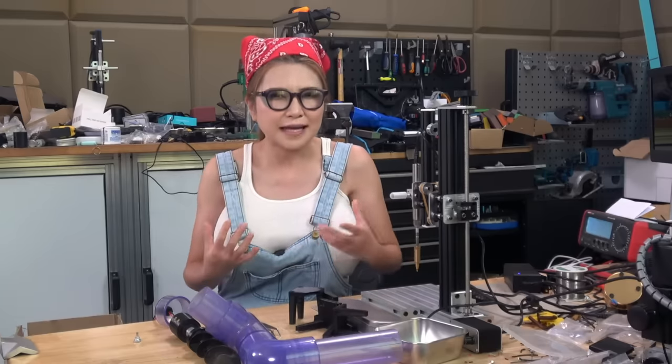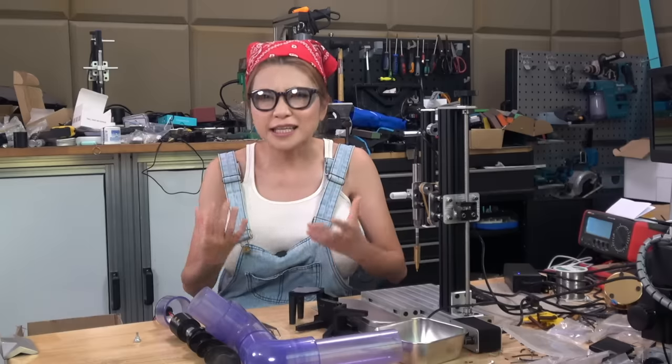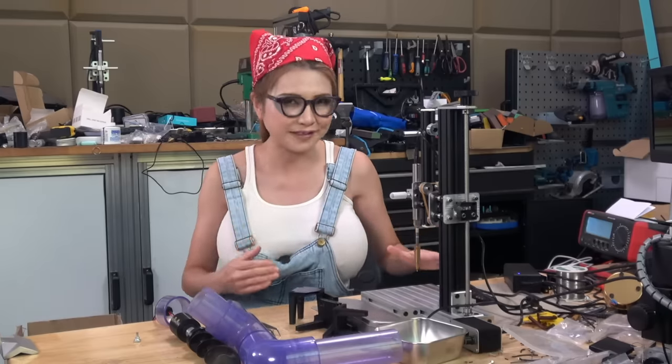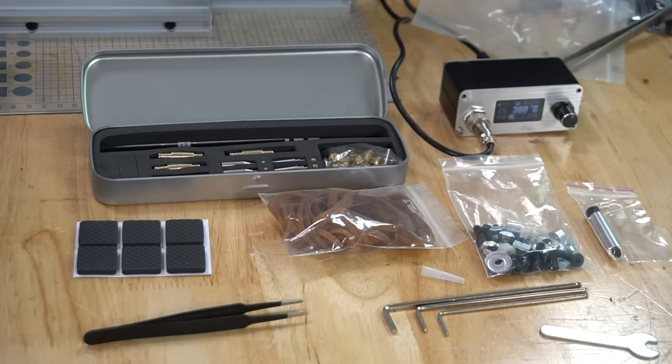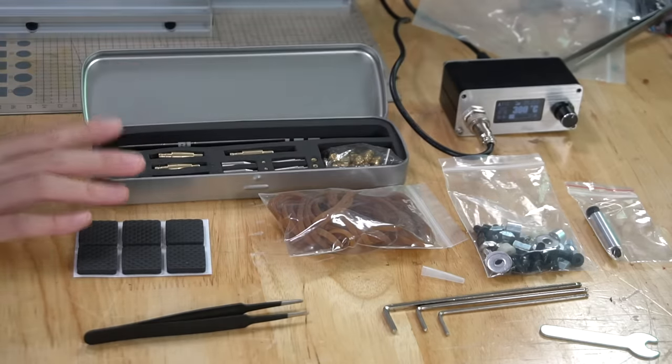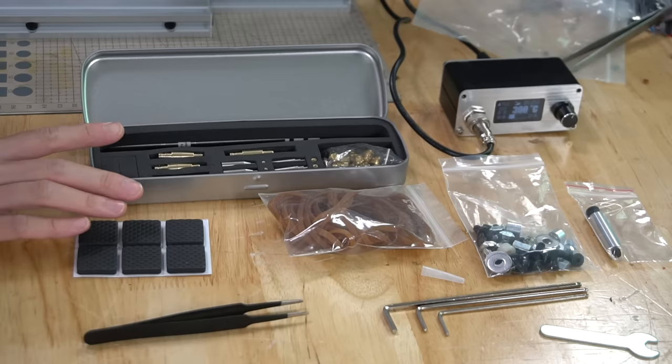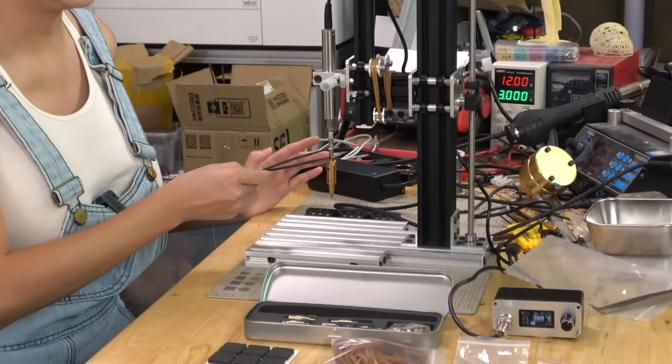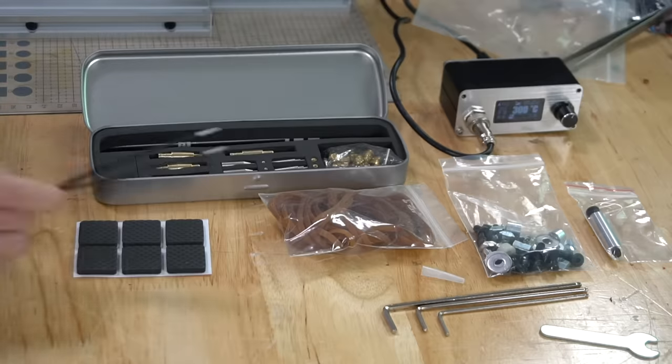If you need it fast, and you need it looking clean, and you can't afford to occasionally mess up a 5-hour print, this insert press will pay for itself. It comes with everything you see here - the digitally controlled heating end, M1.4, M1.6, M2, M2.5, M3, M4, M5, M6 tips, one heating element, and some starter nuts.